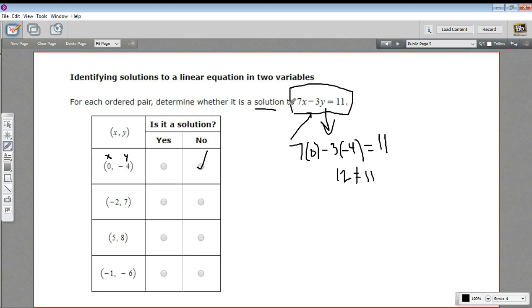Let's try negative 2, 7. So I'll rewrite this equation again. 7 times the x value of negative 2 minus 3 times the y value of 7 equals 11. So 7 times negative 2 is negative 14. Negative 3 times 7 is negative 21. And I can see already this is not going to be a positive 11. This is going to be a pretty big negative number, negative 35. So that doesn't work either.